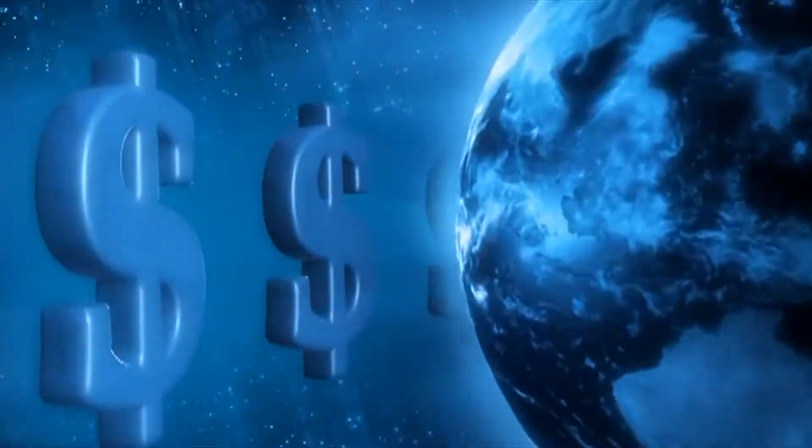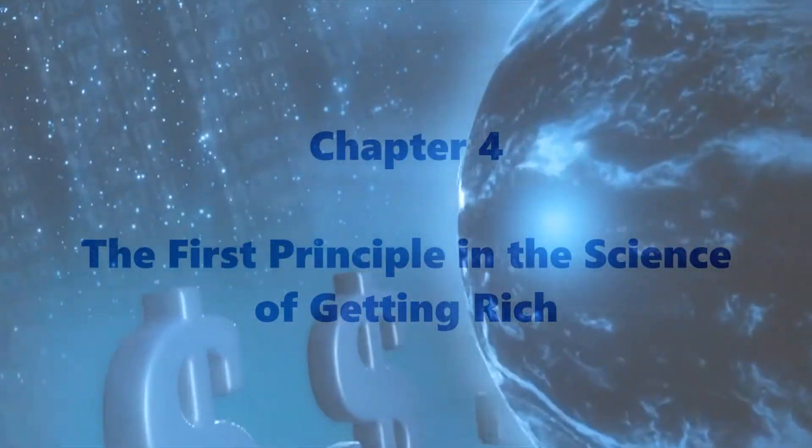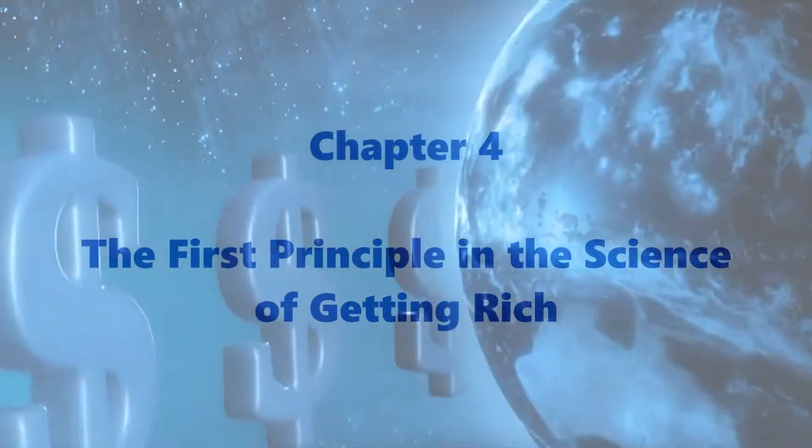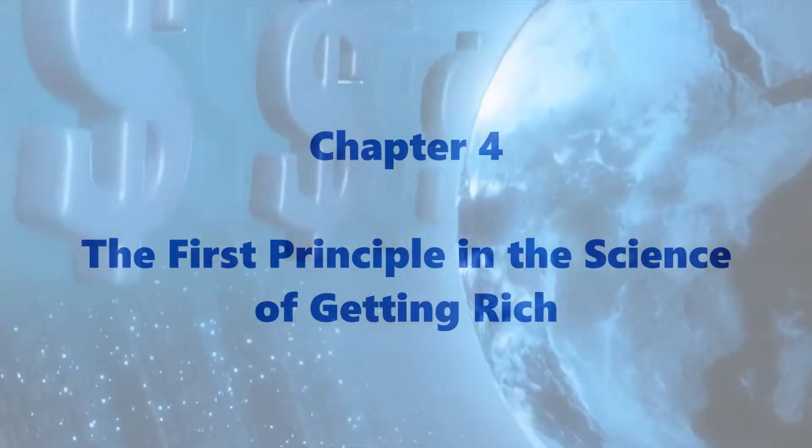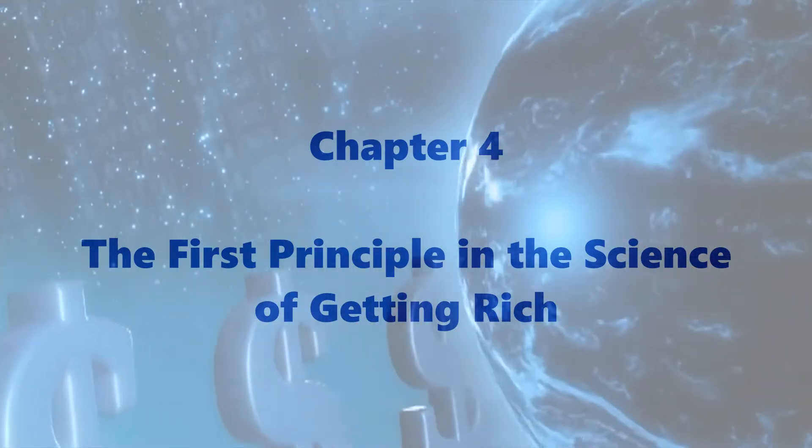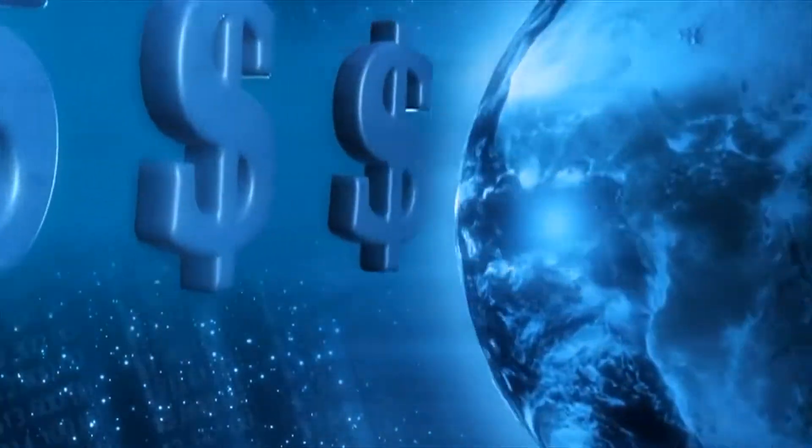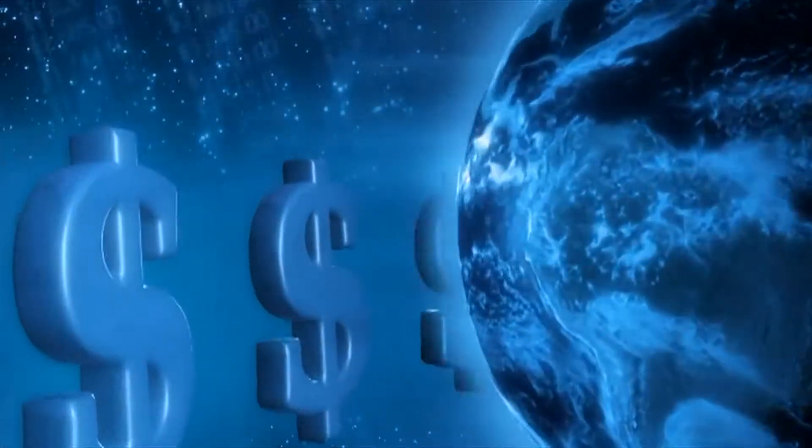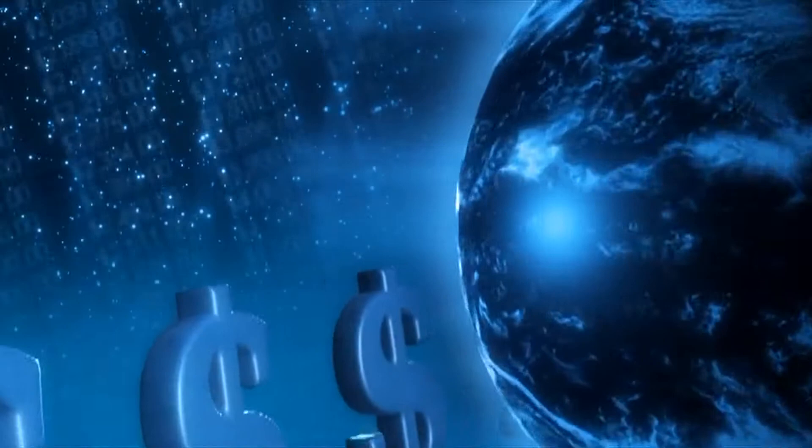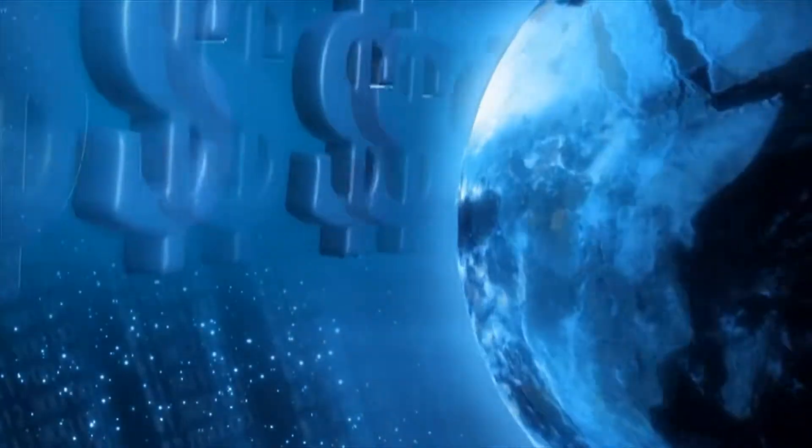All right, well, if you are ready, let's move on to Chapter 4. The First Principle in the Science of Getting Rich. Thought is the only power which can produce tangible riches from the formless substance. The stuff from which all things are made is a substance which thinks, and a thought of form in this substance produces the form.